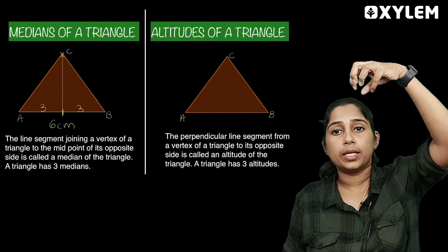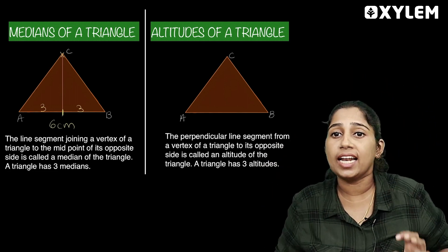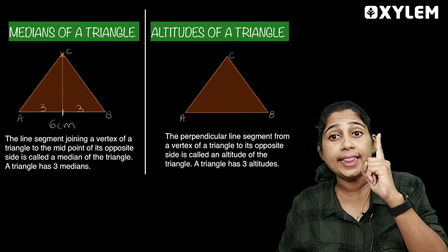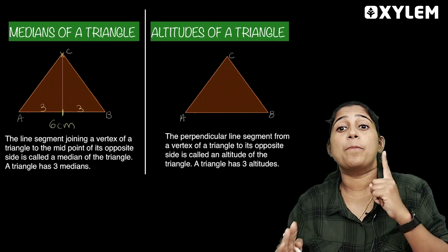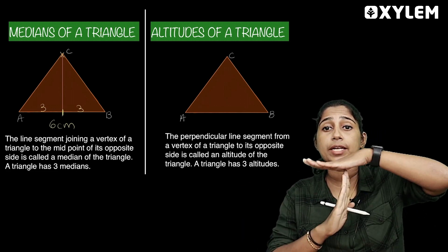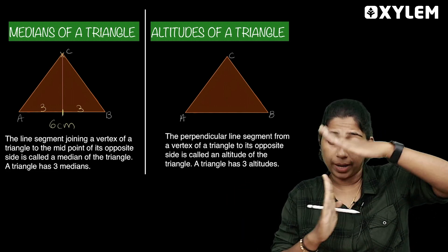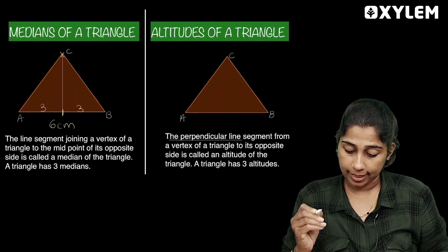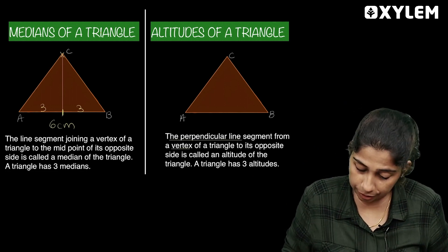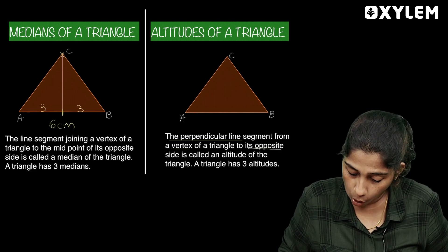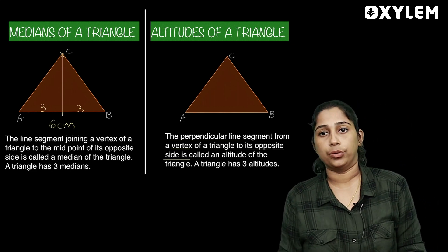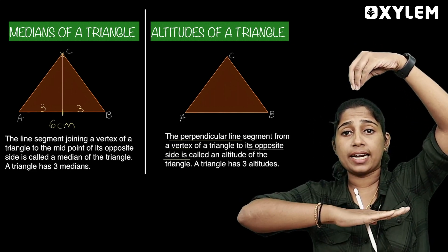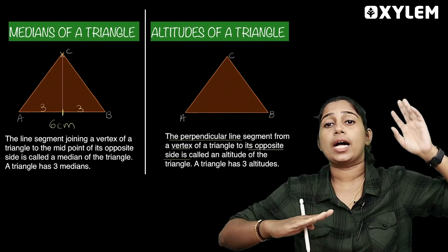The vertical here — the horizontal line will be perpendicular to the opposite side. That is called the altitude. One vertex will be perpendicular to the opposite side.